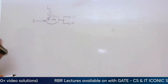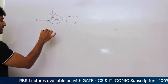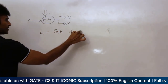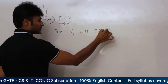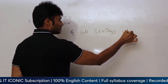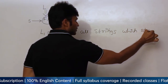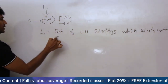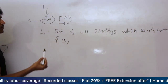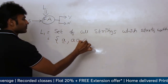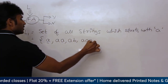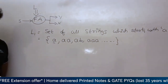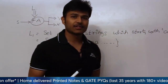Let us say I am drawing some finite representation for a language. L1 is a language which is the set of all strings which start with 'a' — so a, aa, ab, aaa, and so on. I am going to construct a diagram which I will call a finite automata, and then we shall discuss the definition later.